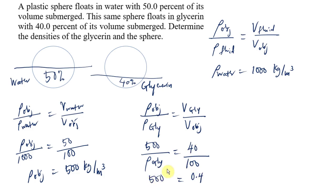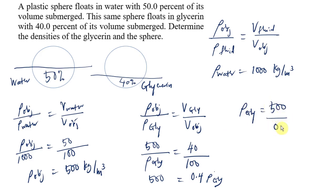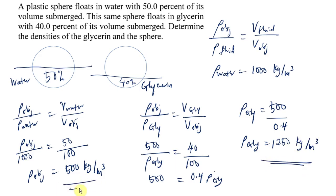We rearrange the equation, bringing the density of glycerin to the other side. So the density of glycerin equals 500 divided by 0.4, which gives 1,250 kg/m³. These are our two final answers: the density of the plastic sphere is 500 kg/m³ and the density of glycerin is 1,250 kg/m³.